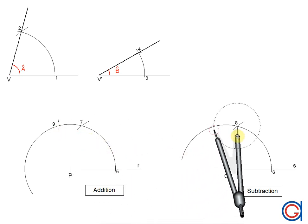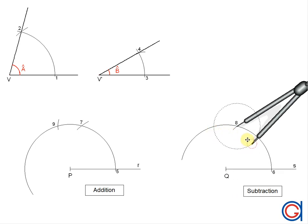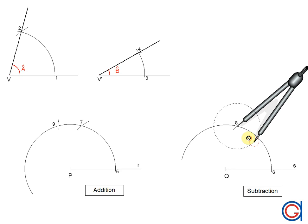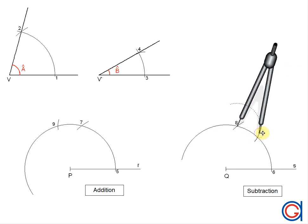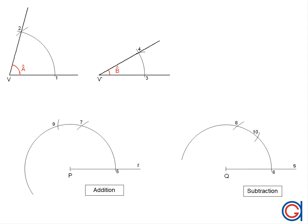We are going to transport the same length 3,4 again to the previously drawn arc on ray S, setting our compass on point 8 and scribing an arc this time to the right — because we want to subtract — until it cuts the previously drawn arc at a new point 10 as can be seen here.